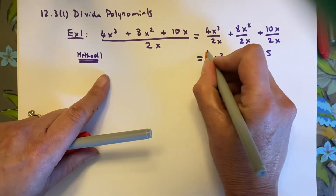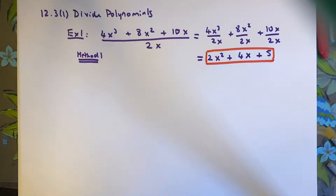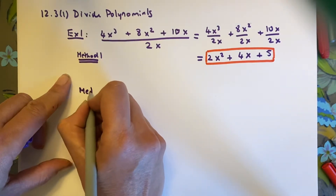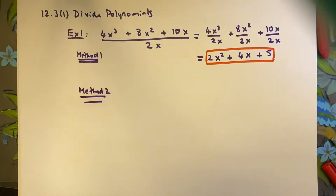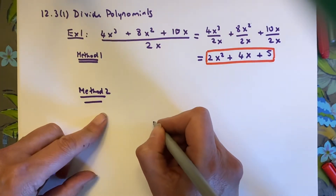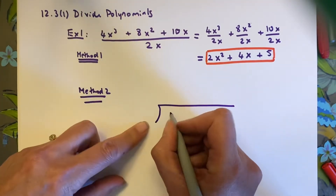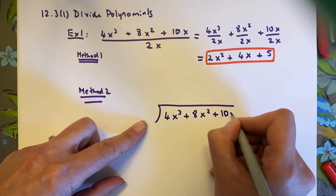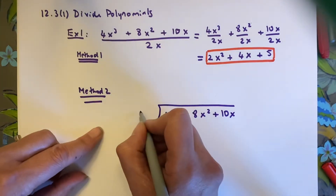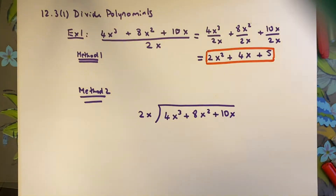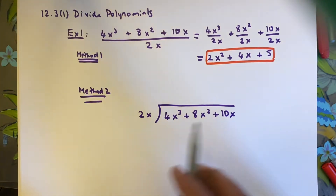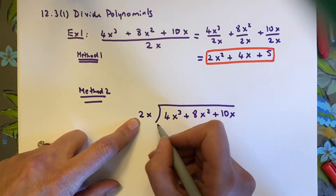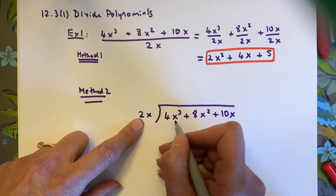Now I'll show you method 2 — long division. We set up the long division with 4x cubed plus 8x squared plus 10x inside, divided by 2x. You think the same way here as with any other division: how many times does 2x go into 4x cubed, or what times 2x gives me 4x cubed?